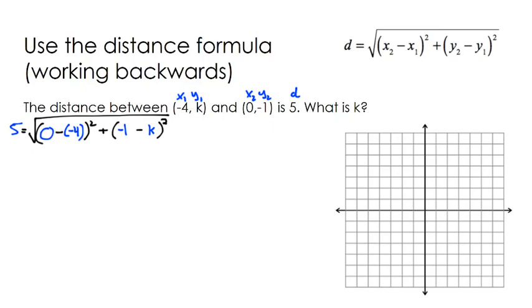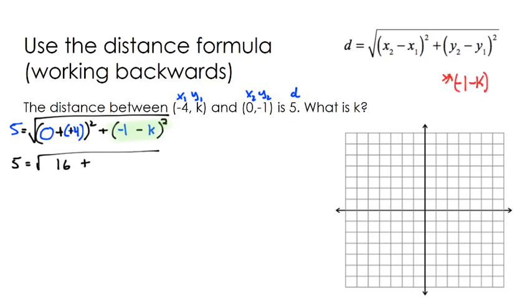Let's do some algebra and simplify step by step. 0 minus negative 4 — when you subtract a negative you're really adding — so that's 0 plus 4, which is 4, and 4 squared is 16. Now for the other part, I need to square the binomial negative 1 minus k by multiplying it by itself: negative 1 times negative 1 is 1, negative 1 times negative k is k, and negative k times negative k is k squared. Combining like terms, that squared binomial becomes 1 plus 2k plus k squared.